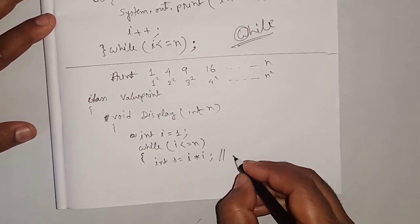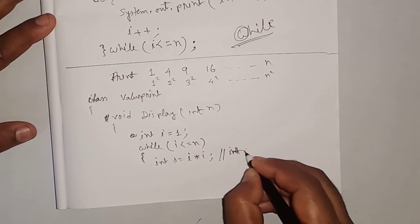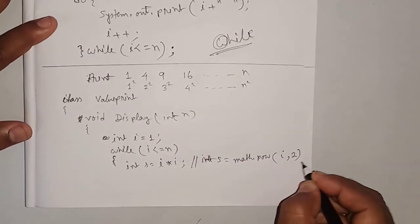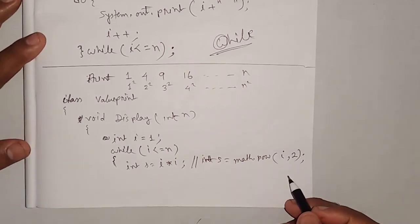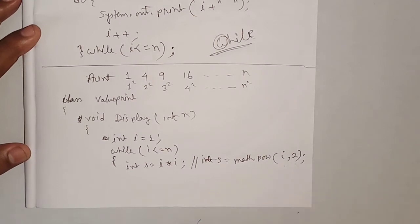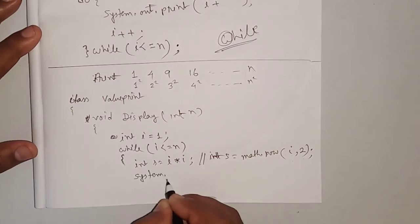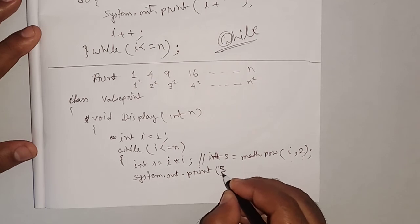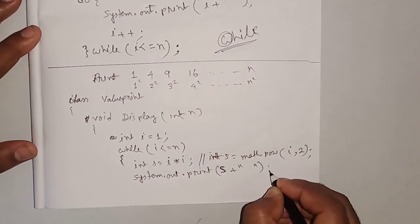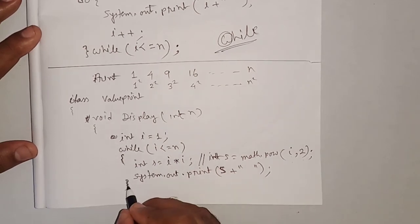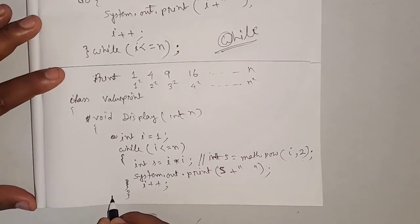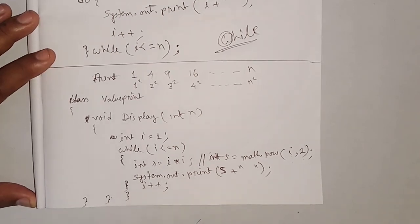You can write int s is equal to i multiplied by i, or you can write int s is equal to Math.pow(i, 2). You know this is a mathematics formula for calculating power — the first one is i and the power is 2. Then system.out.print — I'm printing the value of s and a blank space. Then i plus plus, then while loop close, then method close and class close. So we are doing the calculation this way.